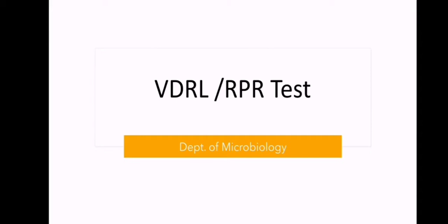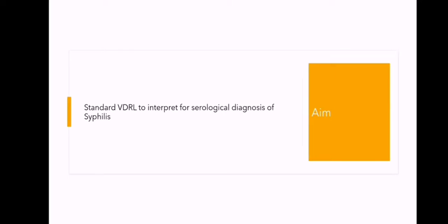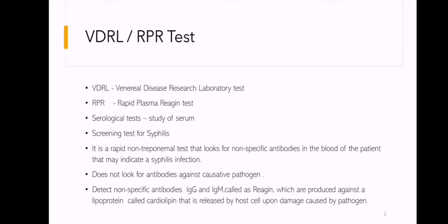VDRL-RPR test. The aim is to perform a standard VDRL test to interpret serological diagnosis of syphilis. VDRL stands for Venereal Disease Research Laboratory Test; RPR stands for Rapid Plasma Reagent Test. Both VDRL and RPR are serological tests, and RPR is an improved version of VDRL. They are performed as screening tests for syphilis.